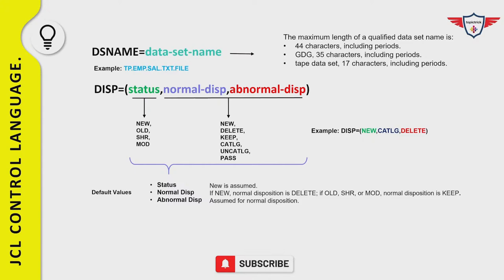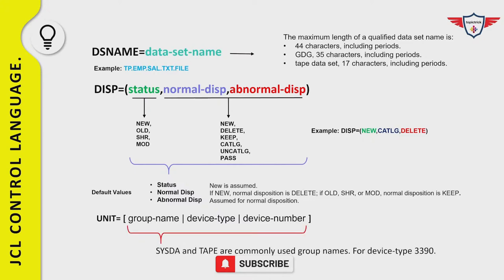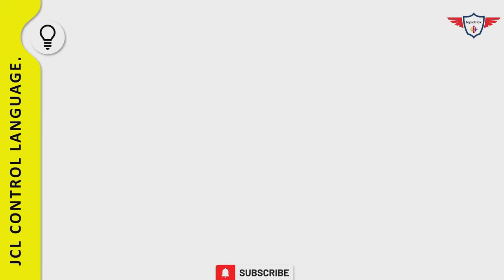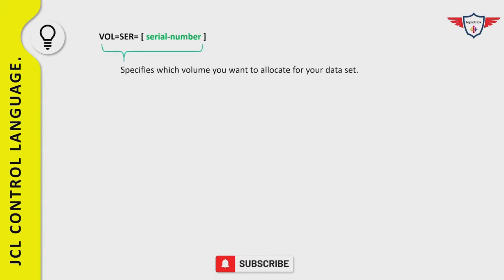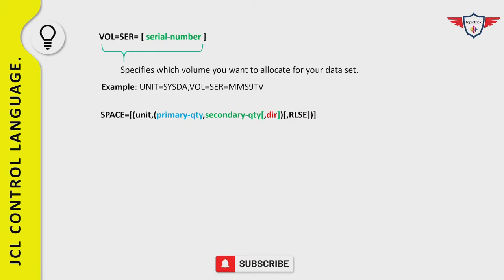The UNIT parameter specifies the tape or disk device where the dataset resides. If the dataset is already cataloged, UNIT is not required; if allocating a new file, you must specify it — typically SYSDA or TAPE, or a specific device number. VOL=SER specifies the volume serial number where you want to allocate the dataset, for example: UNIT=SYSDA, VOL=SER=MMS9TV.